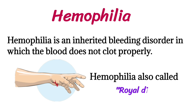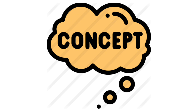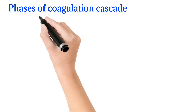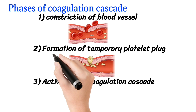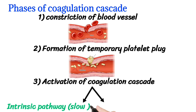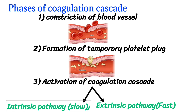First we have to know some basic concepts so that we understand haemophilia more clearly. The phases of the coagulation cascade are: constriction of the blood vessel, formation of a temporary platelet plug, and activation of the coagulation cascade. There are two pathways — the intrinsic pathway, which is slow, and the extrinsic pathway, which is fast. Haemophilia is concerned with the intrinsic pathway.